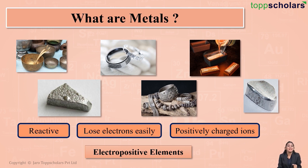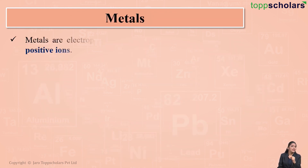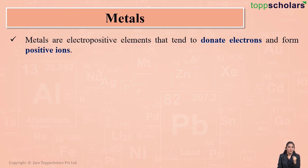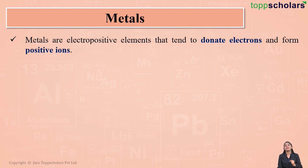Metals lose electrons easily and form positively charged ions. So we can define metals as electropositive elements that tend to donate electrons and form positive ions.